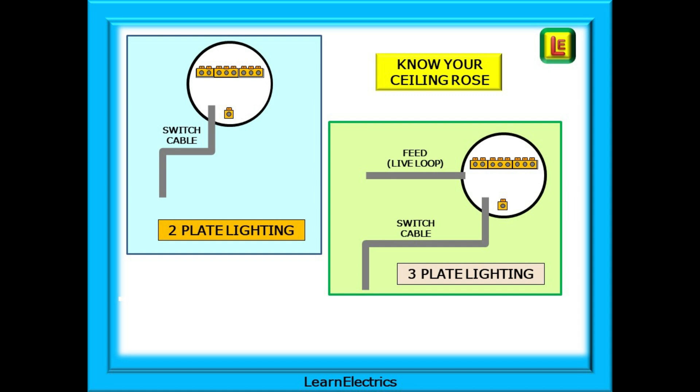In a two-plate system there will only be one twin and earth cable entering the ceiling rose and that is the switch cable coming from the switches. For a three-plate system there will be two twin and earth cables: a switch cable from the switches and a feed cable from the consumer unit.